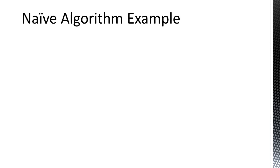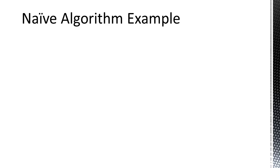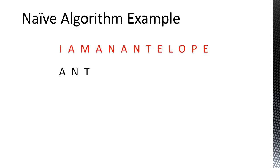The easiest way to solve this problem is with a naive or brute force algorithm. Start with the pattern or string — I'll use the word 'ant' for this demonstration — and find it in the text: 'I am an antelope.' To start this algorithm, first line up the pattern with the text, then start comparing letters one by one, starting with the leftmost character.